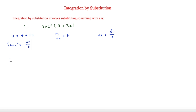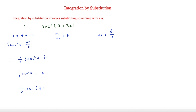Now this is a lot easier. We can take out a third first of all, so then it is only in terms of du. We have a third sec squared u du. Integrating this gives a third tan u, because sec squared u integrates to give tan u, and then plus c. So finally putting in u, the answer is one third tan(4 plus 3x) plus c.